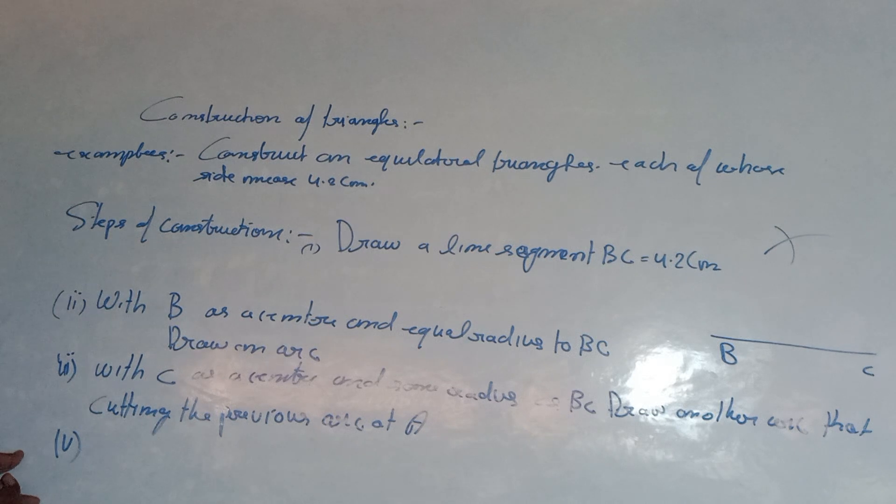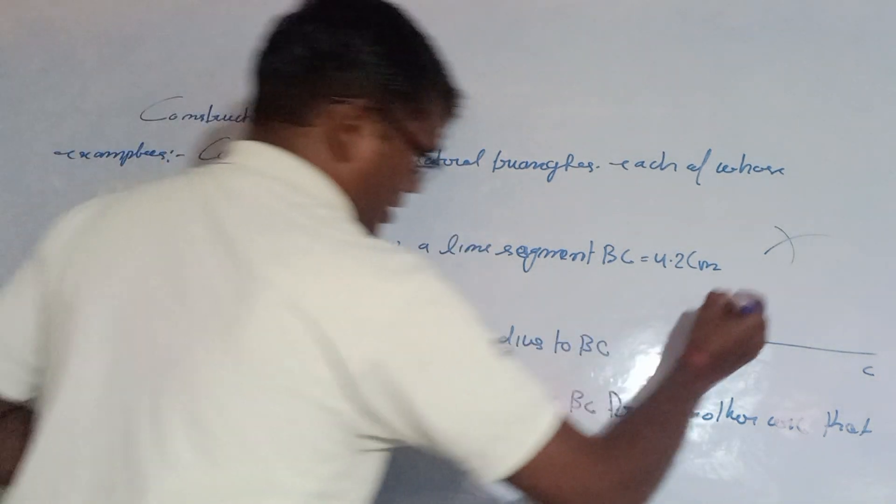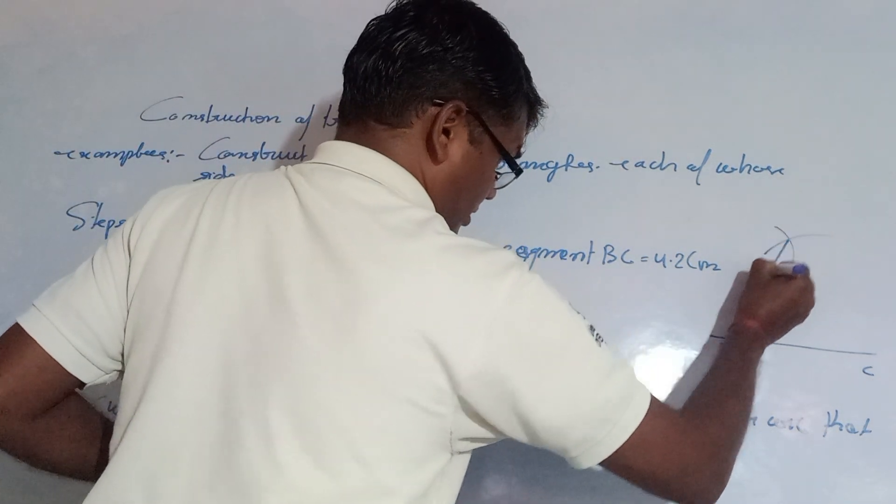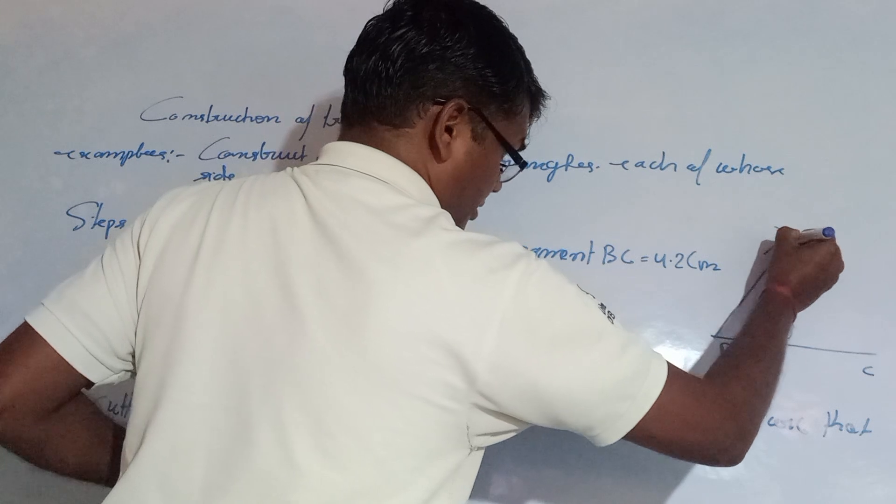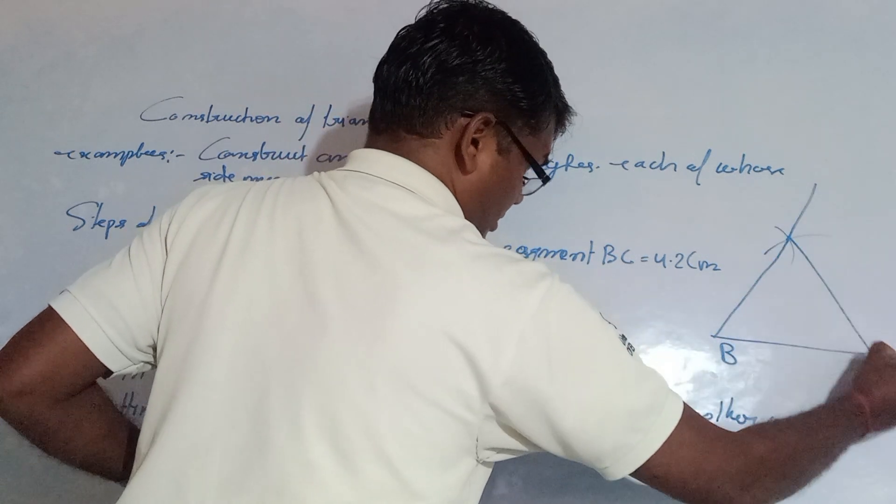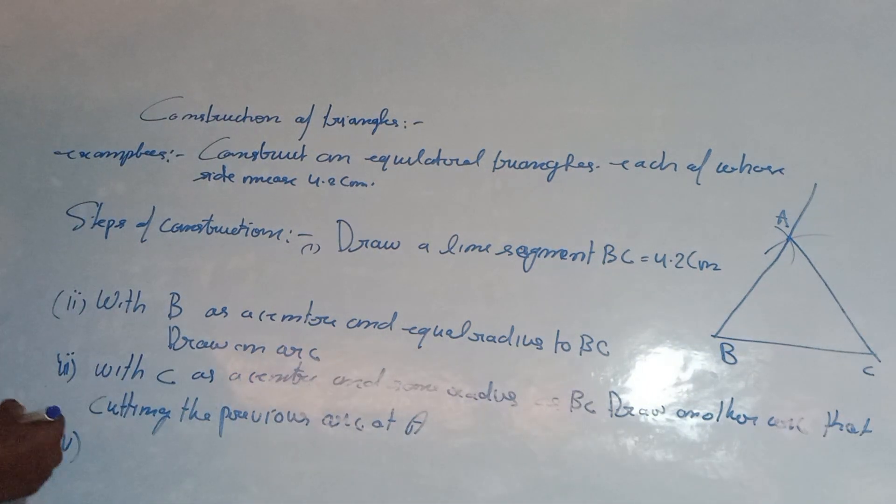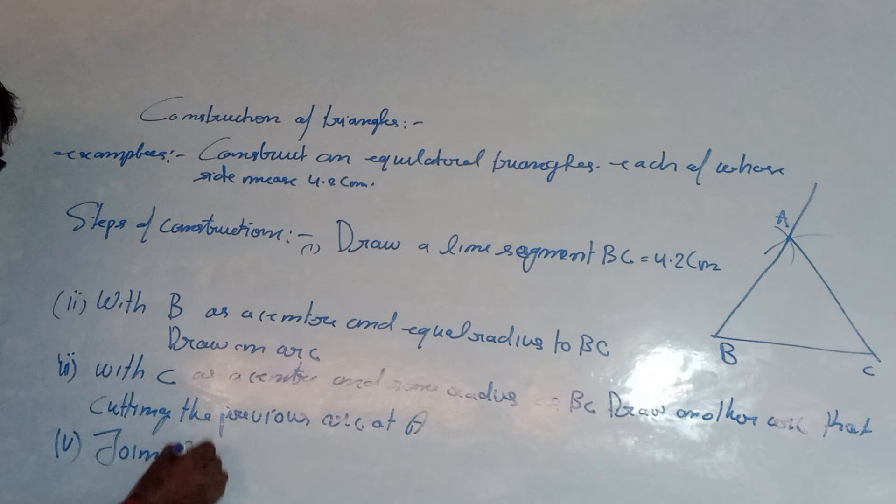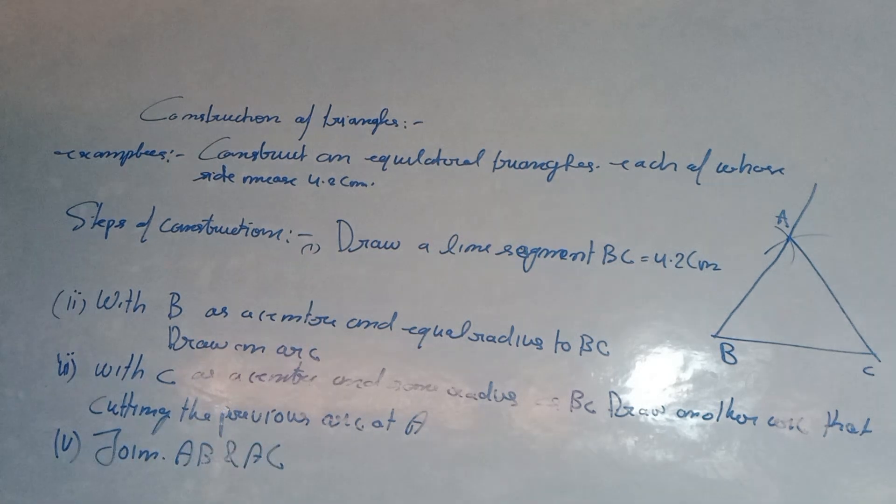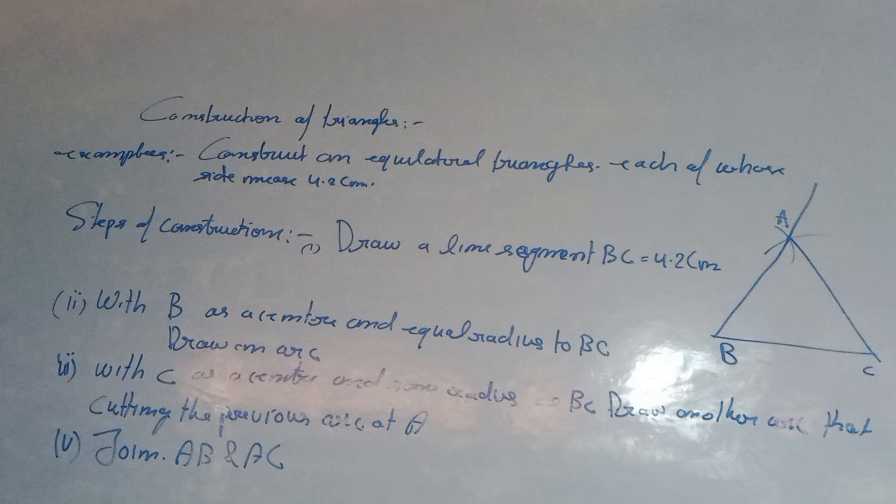Fourth point: join AB and AC. We will join AB and AC. The triangle ABC is the required triangle.